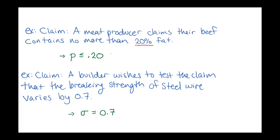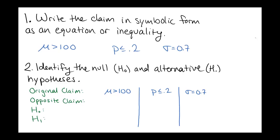We want to conclude whether a claim is correct or not based upon collecting data. The first step in this process is to take our claim written in words and write it in symbolic form as either an equation or an inequality — which is what we just did in these three examples, giving us statements about the mean, proportion, and standard deviation.